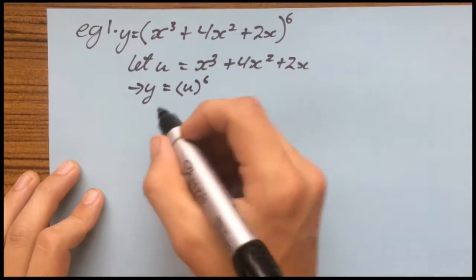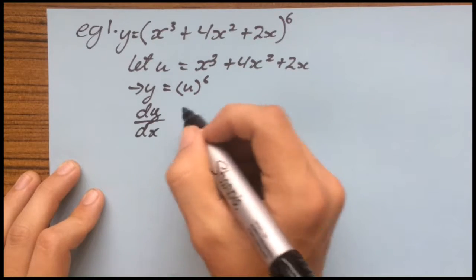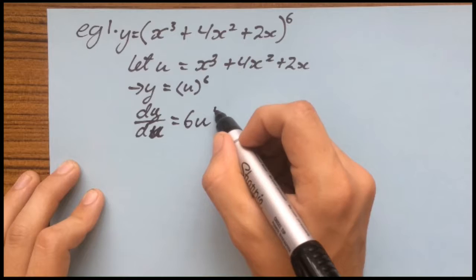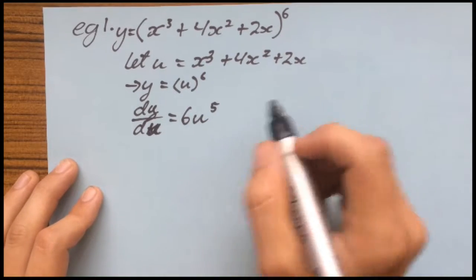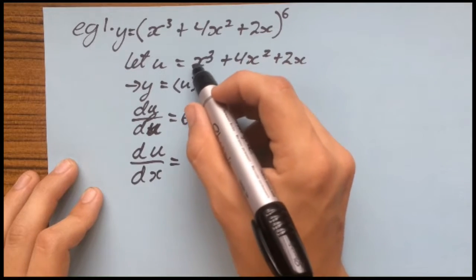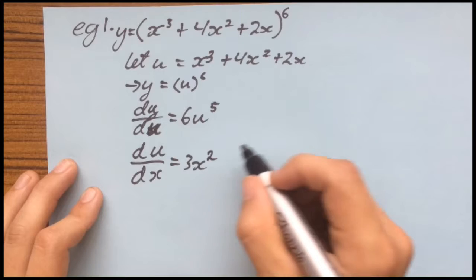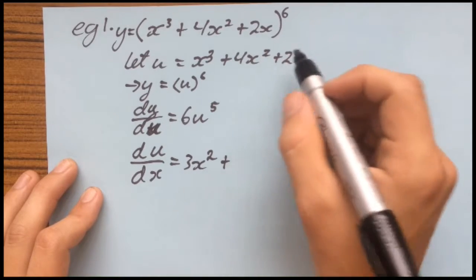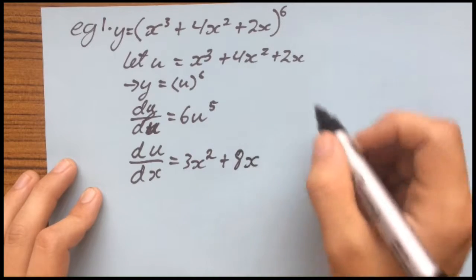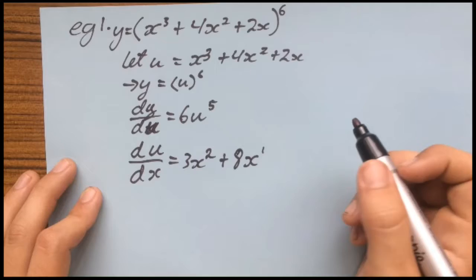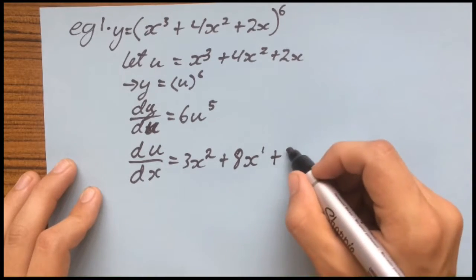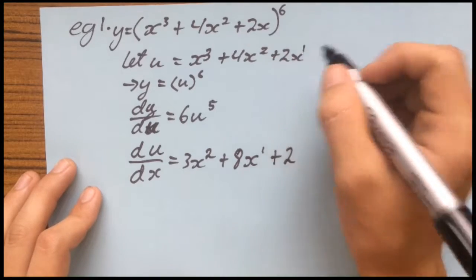Now you can apply the power rule. Same process: dy over du equals 6u to the power of 5, because you bring the power down and take 1 off. Now du with respect to x: bring the power down for x cubed, that's 3x squared. Plus the derivative of 4x squared: bring the 2 down and multiply by 4, which is 8x. Plus the derivative of 2x, which is just 2, because the power becomes 0 and you're left with 2.